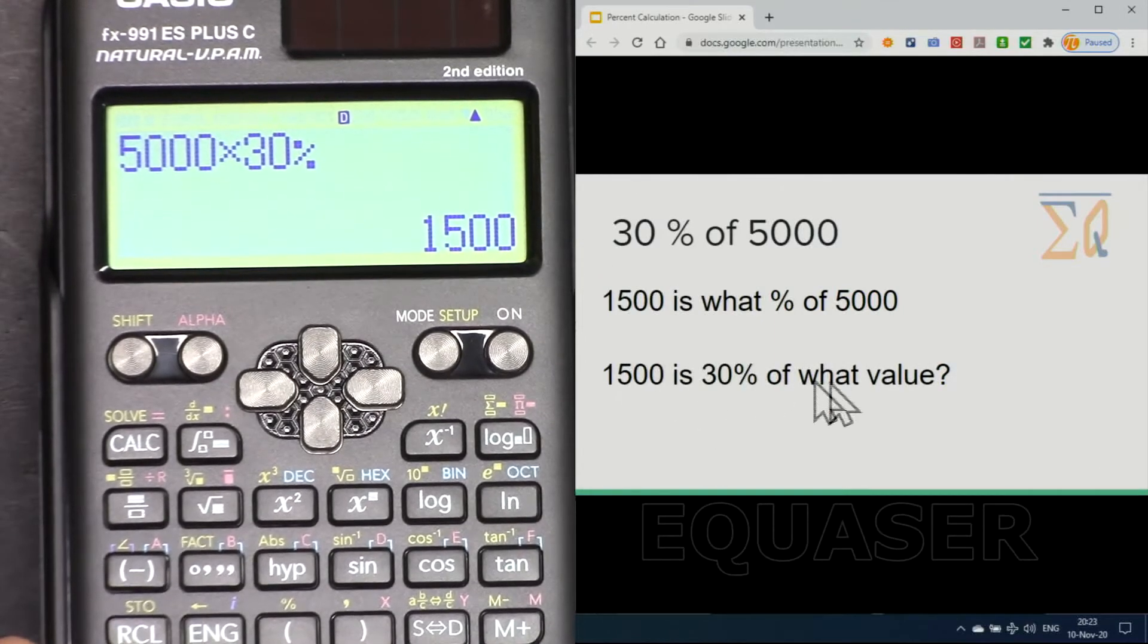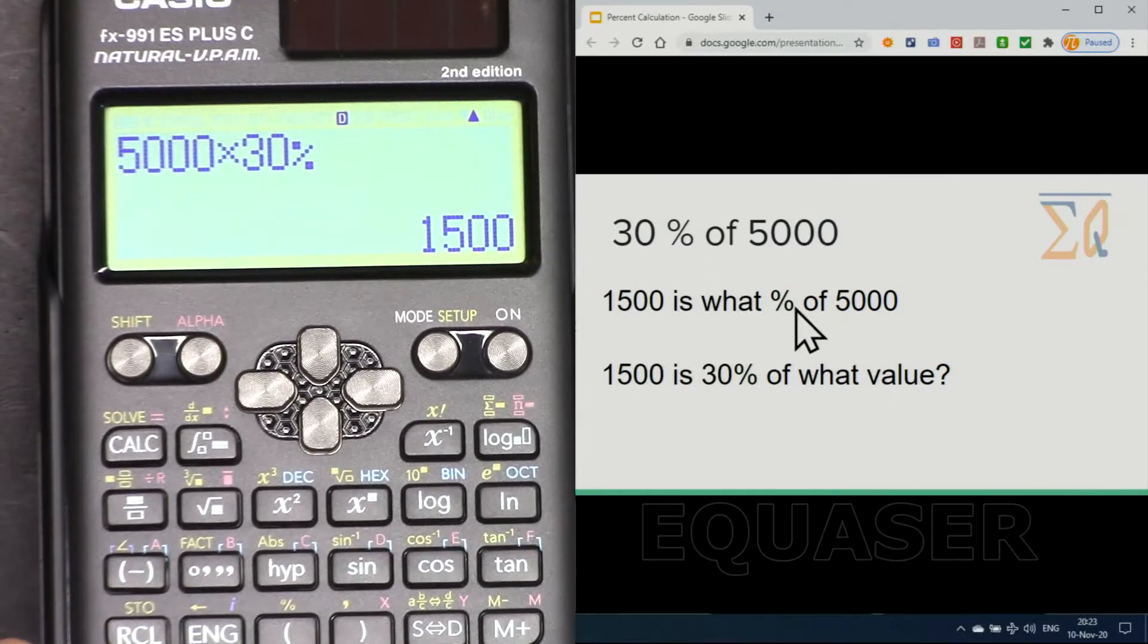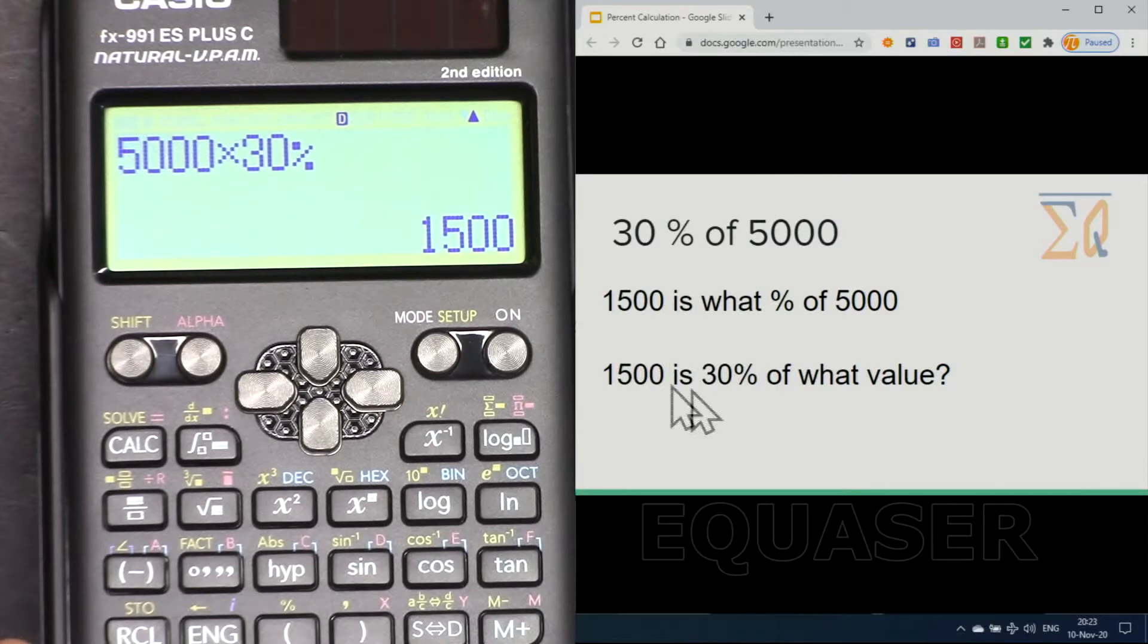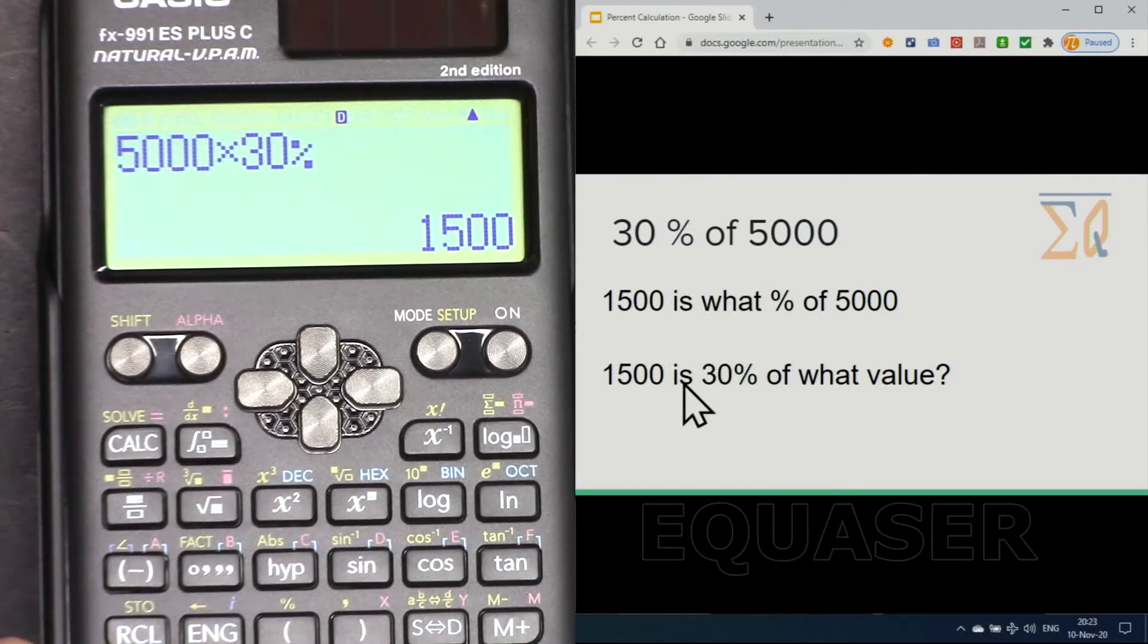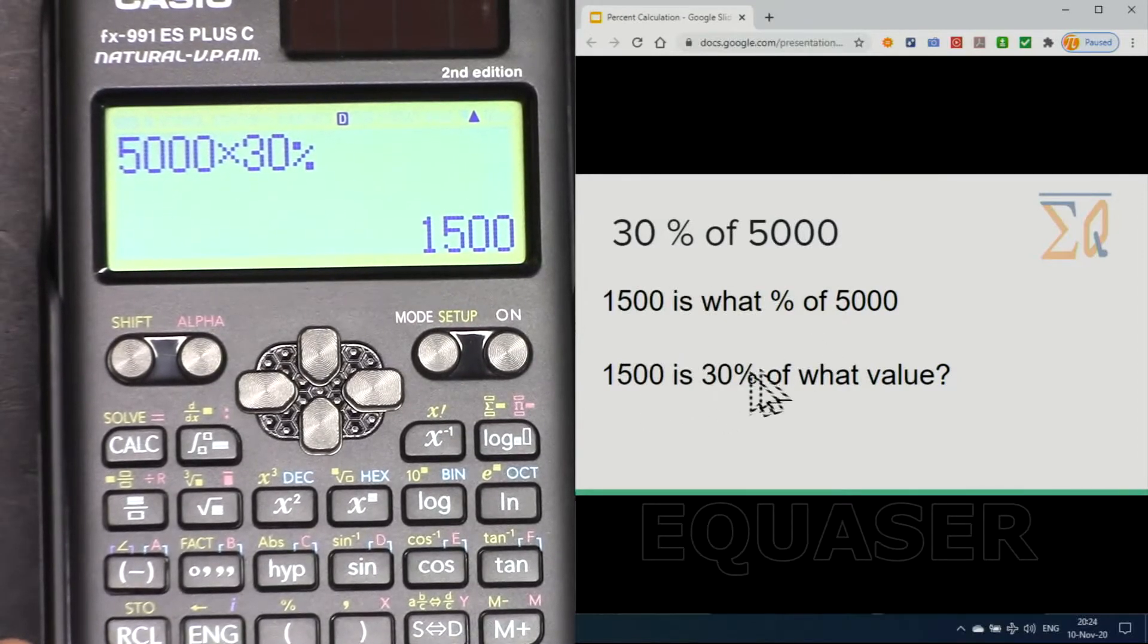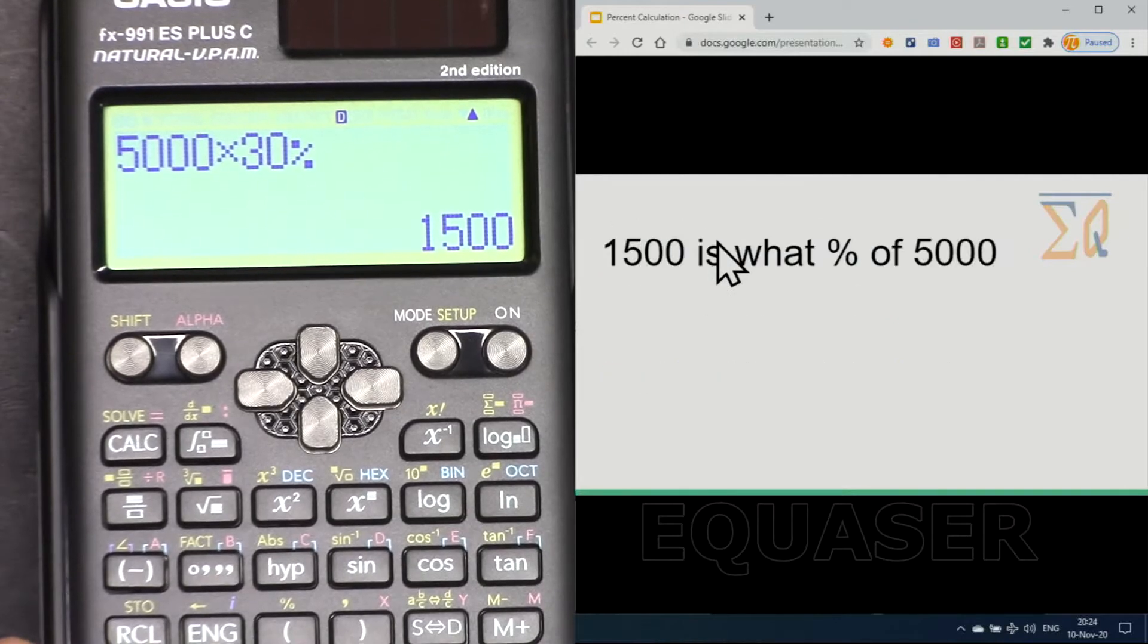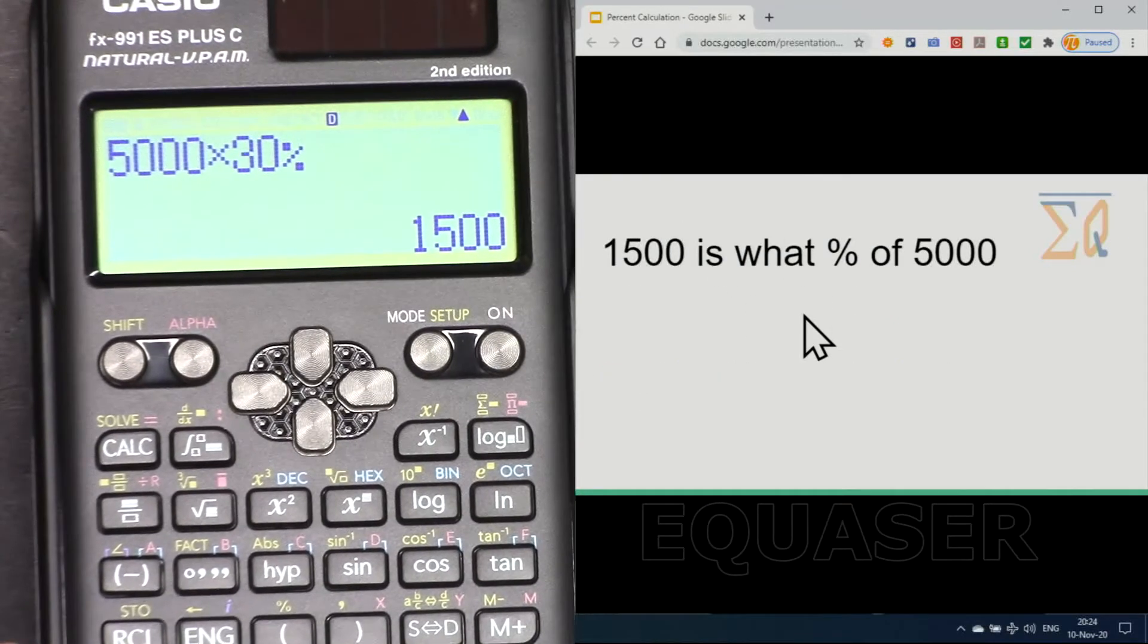Or you can get a question like this: 1500 is 30% of what value? In this case, the answer will be 30 because 30 is not in this equation if you want to find. And here, the answer will be 5000, which means 1500 is 30% of what value, and it is 5000.